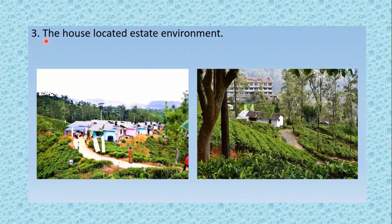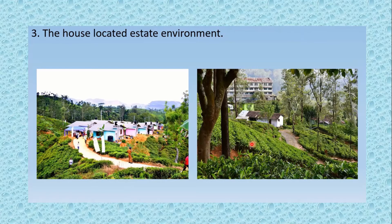The third one: the house located in an estate environment. You know, children, some people are living in houses located in an estate — especially estates like tea, rubber, and coconut. As most of them are workers of these estates, they have to build their houses in an estate environment.